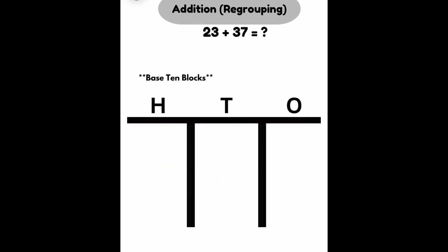Looking at the last and final strategy of base 10 blocks, we're going to throw everything in, just like we've been doing. Let's look at 23 first. We're going to put 2 tens and 3 ones. Now I'm going to look at the second one and now put 37 in.